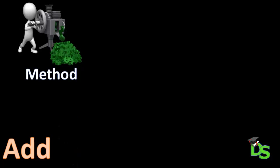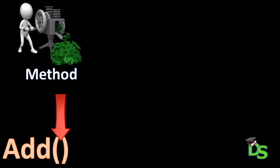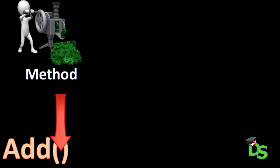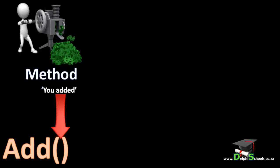Some methods require us to provide input. The add method, for example, needs to know what must be added to the lines of the memo. We must therefore give something to the add method to enable it to add it to the lines property. If a method requires an input, you must put that input between two brackets after the method name. You must also know what type of input is required by the method that you are calling. The add method can only add a string value to the lines of the memo. You will therefore type a string between the two brackets. For example, you can type the words 'you added' between the brackets, and that phrase will then be added to the lines property.